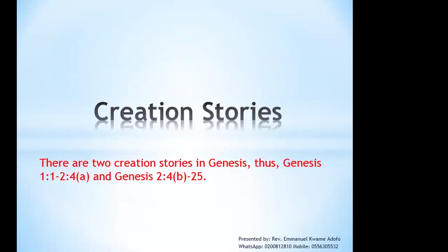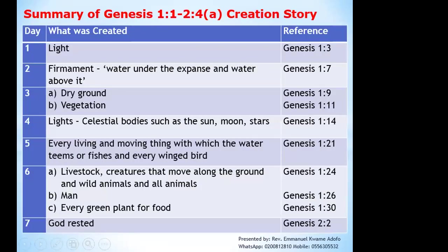There are two creation stories in Genesis. The first is Genesis chapter 1, verse 1 to chapter 2, verse 4a. And then Genesis chapter 2, verse 4b to verse 25. In this story, we get to know that the Genesis chapter 1 account has the days numbered for us. That is how the creation story starts.